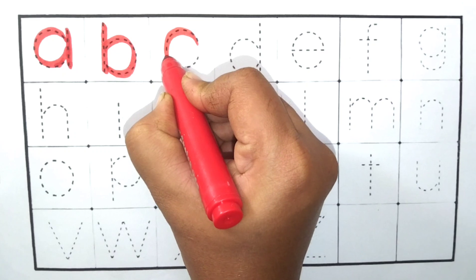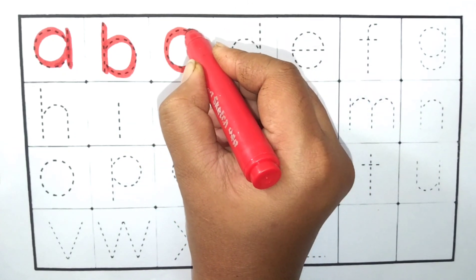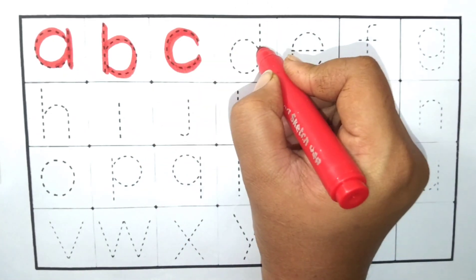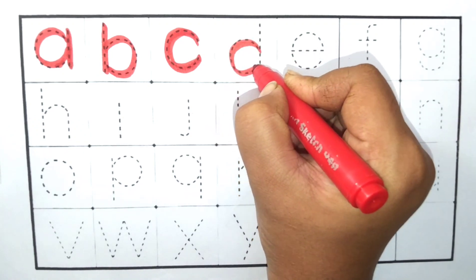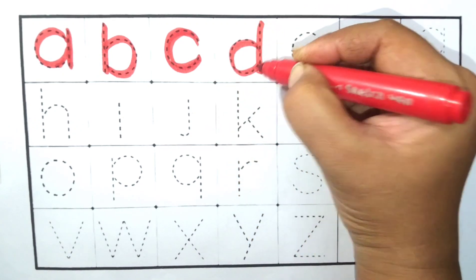C. C4. Cat. Cat means billy. D. D4. Dog. Dog means kutta.